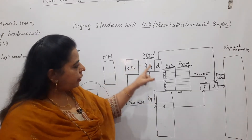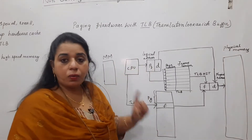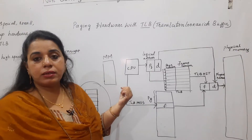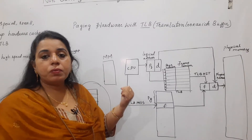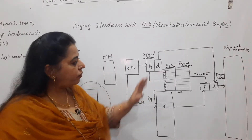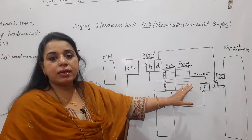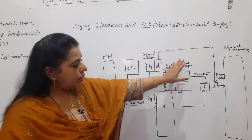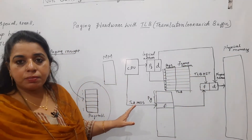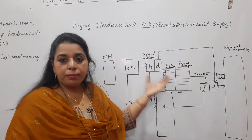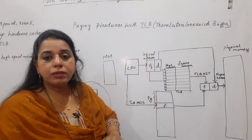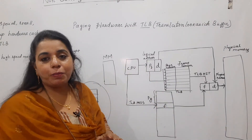So how are we going to improve access time? We want to reduce access time by using the TLB. This is the diagram given in the textbook, but to understand it, you first have to learn the previous session topic — the basic concept of paging.